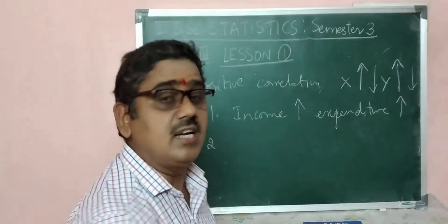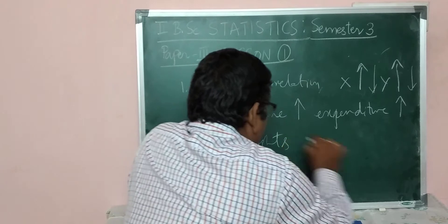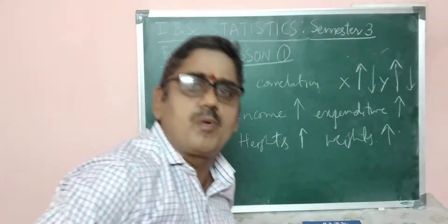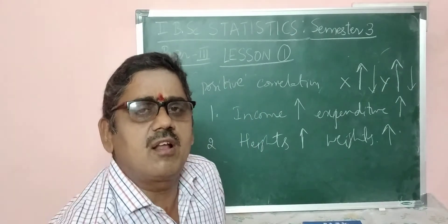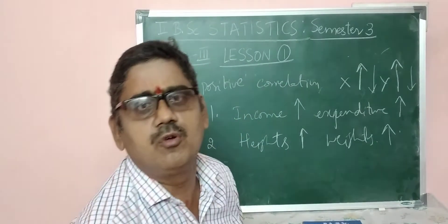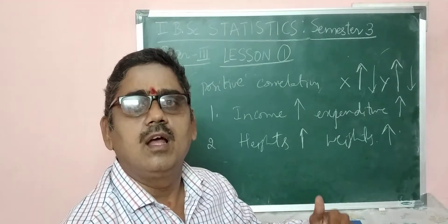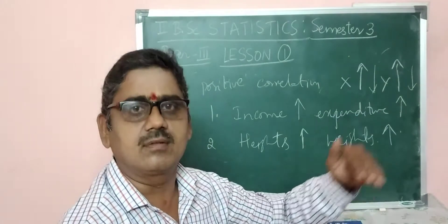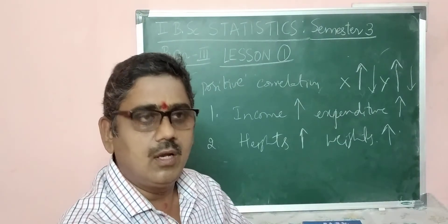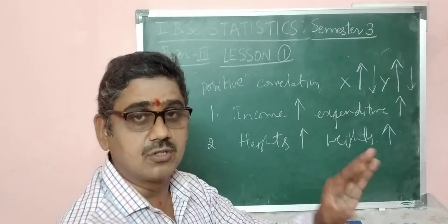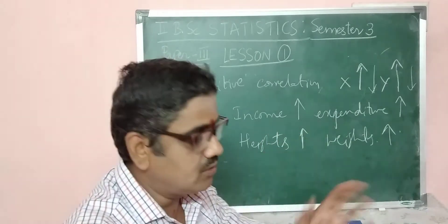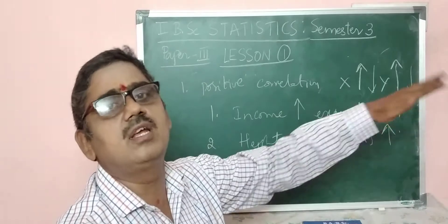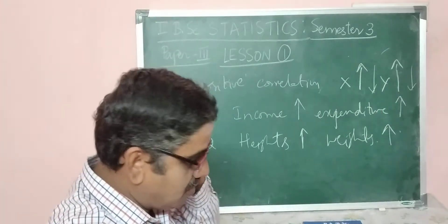Similarly, consider heights and weights of a competitor who participates in a competition. Usually in human patterns, if the height of a particular person increases, weight also usually increases — it is the usual pattern you observe. If height increases, weight of a particular person or group of persons also goes up. I hope you are able to follow these examples.